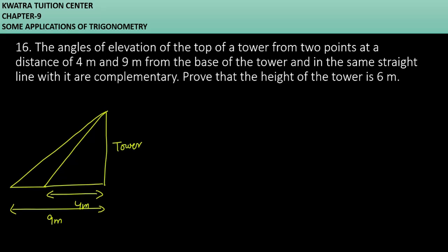Complementary means that the sum of them should be 90. So what do you do in this case? You take one angle with theta and the other is 90 minus theta. Because if you add these two, what do you get? 90.